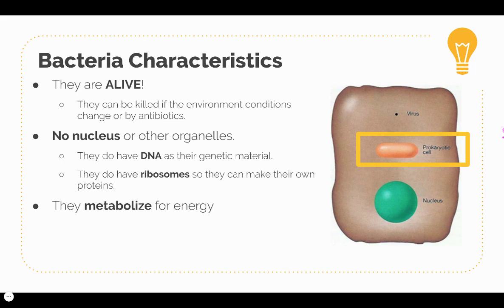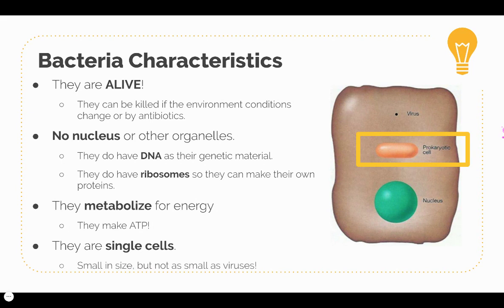Bacteria can metabolize for energy in order to make ATP — we'll be talking about two ways that they can do this. They are single cells. One thing to note is that they are small in size, but they're not as small as a virus. If you look at this picture, you can see the virus is the small tiny dot, and in comparison a prokaryotic cell is much bigger than a virus, but when looking at a eukaryotic cell, a bacteria cell is still really small. Bacteria cells are right in the middle in terms of size.